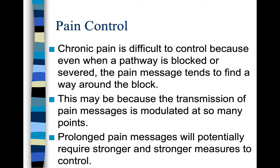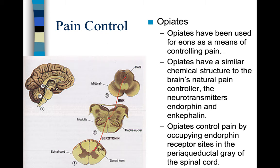If you're only taking opiates, you need to do something else — use a TENS unit or acupuncture to block the pain otherwise. You need to be active in your control of pain. Opiates have been used for eons as a means of controlling pain. They have a similar chemical structure to the brain's natural pain controllers, the neurotransmitters endorphin and enkephalin. Opiates control pain by occupying endorphin receptor sites in the periaqueductal area of the spinal cord.